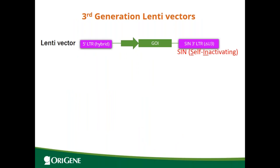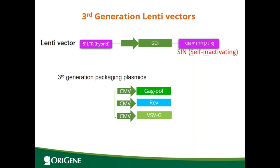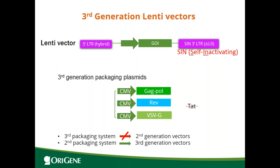This is the third generation lenti vector. It's self-inactivating (SIN). The 5-prime LTR is hybrid, and the 3-prime LTR is a SIN-LTR. It contains a deletion of the U3 region, which makes the virus replication deficient. The packaging plasmids for the third generation are provided on three separate plasmids, and TAT is no longer needed. Therefore, if you're asking whether the third-generation packaging system can work for the second generation — the answer is no, because it no longer provides TAT. But the second generation packaging system can work for the third generation vector; it just has extra TAT expressed but not used.